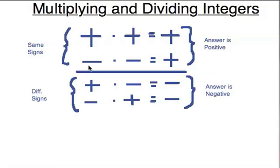If the signs are the same, the answer is positive. If the signs are different, the answer is negative. In other words, a positive times a positive is a positive. A negative times a negative is a positive. A positive times a negative is a negative. And a negative times a positive is a negative.